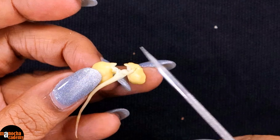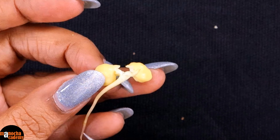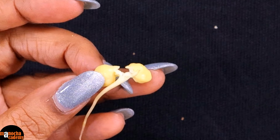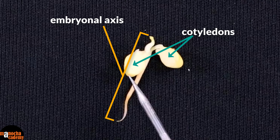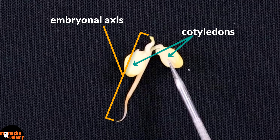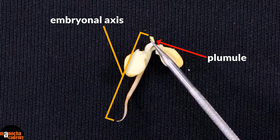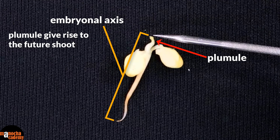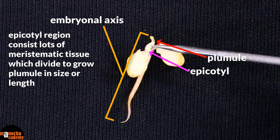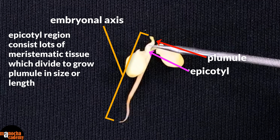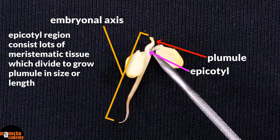The kernel, which is the inner content of the seed, consists of the two cotyledons and the embryonal axis. Now let us have a closer look at the embryonal axis. These are the parts of a dicot seed — the two cotyledons are on the two sides. This is the plumule, which will give rise to the future shoot. The epicotyl region consists of a lot of meristematic tissue, and when these meristematic tissues divide, the plumule grows in size or in length.